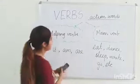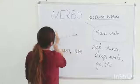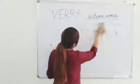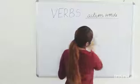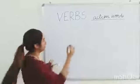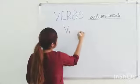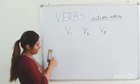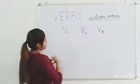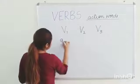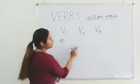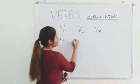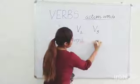Now let's get back to the three forms of verbs, which we have been learning in our previous class. Let's take the verb 'go'. Today's verb is go. So what are the three forms of verb go? Go, went, gone.